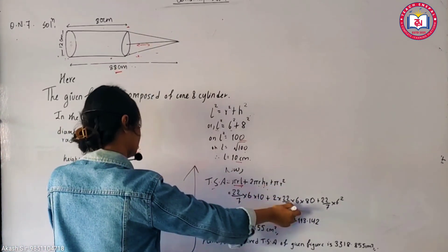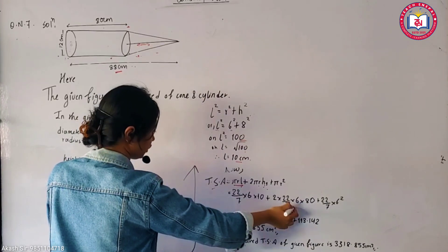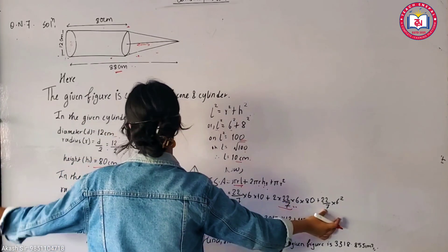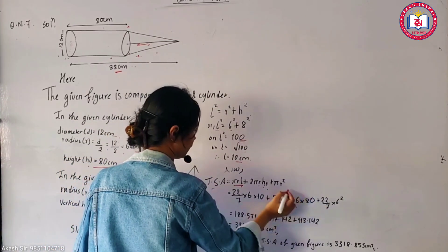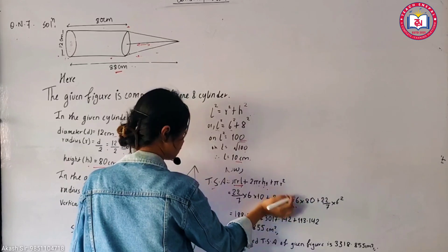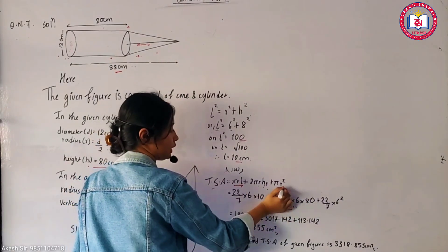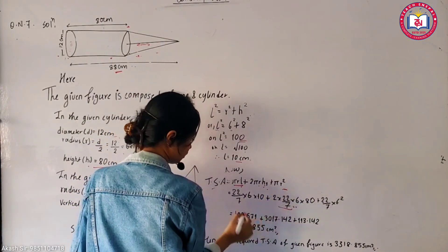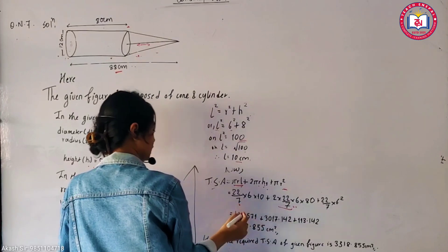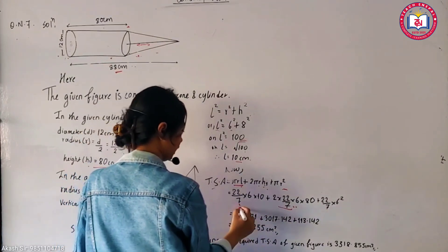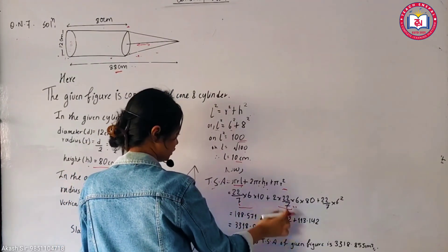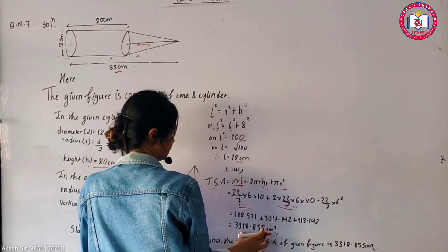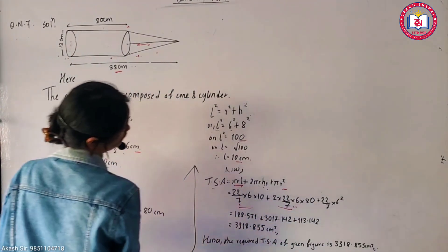This is the formula for the cylinder, using the same formula. So this is the base area.